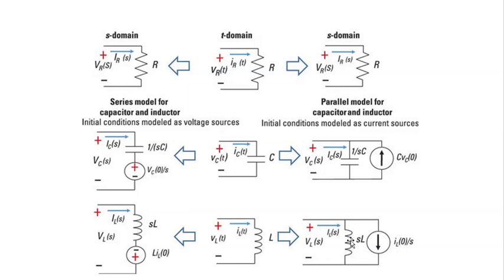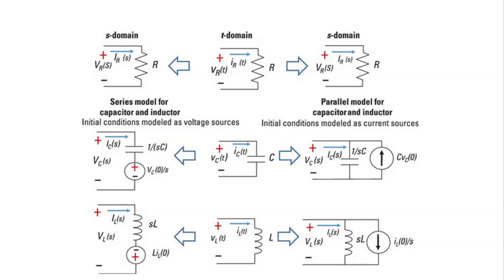These two models can be used interchangeably in any circuit you want. Keep this table for both elements in mind. If you remember one of them, the other can be derived easily using source transformation. Keep in mind how to model a capacitor with initial condition and how to model an inductor with initial condition in Laplace domain. When you replace them with these circuit models, your life will be much easier and you will simply deal with them as normal impedances.